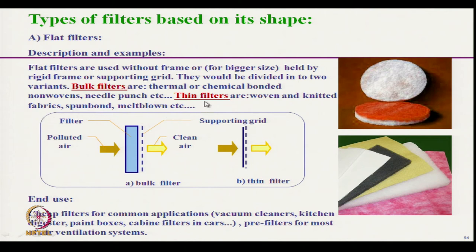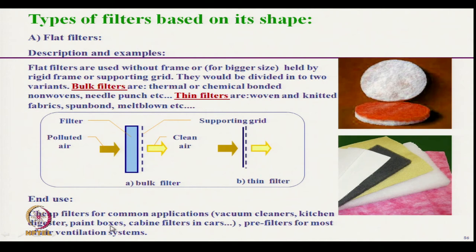Thin filters use thin woven, knitted, spun-bonded, or melt-blown fabrics with a supporting grid. Bulk filters are used where depth filtration is needed, while thin filters are used for surface filtration. Flat filters are used where cheap filtration solutions are required, such as vacuum cleaners, kitchen digesters, and paint boxes.